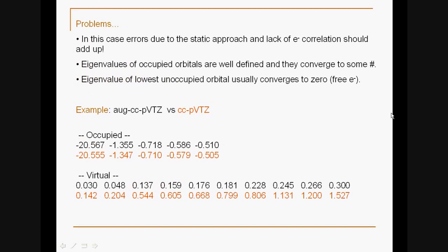Here, however, we run into some problems when calculating the electron affinity. These problems are usually more severe compared to the case where we were kicking out the electron. In our case where we calculate electron affinity, the errors due to the static approach and the lack of electron correlation should add up. These two errors add up, so we get a larger error. Remember we had a cancellation of errors in the case where we were calculating ionization potentials.